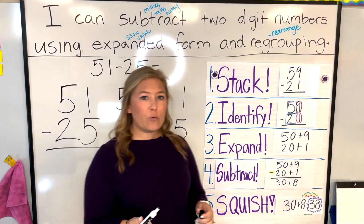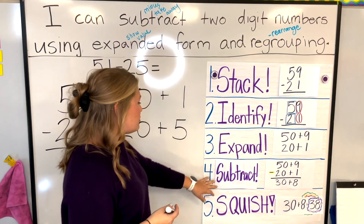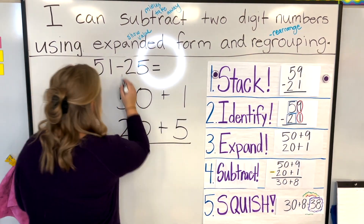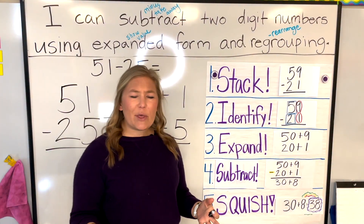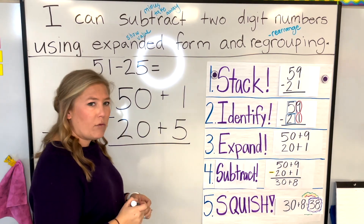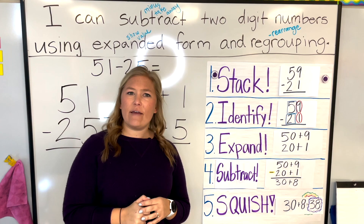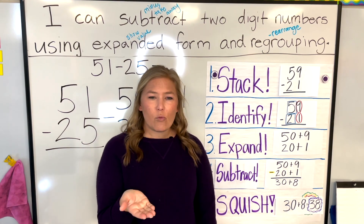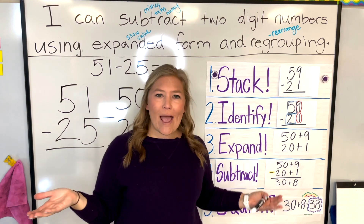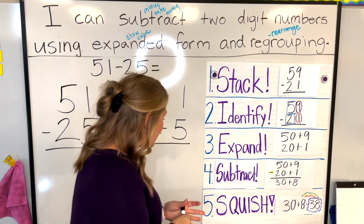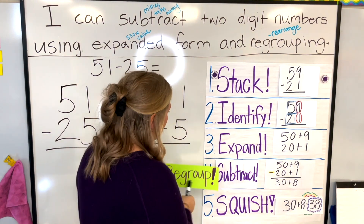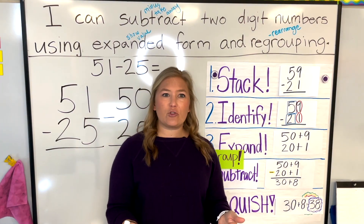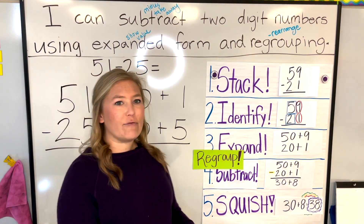Now we've expanded, and this is where we're adding an extra step today. Before we can subtract, there's something I already notice. If I were to go to the ones place and do one minus five — can I do one minus five? If I was holding one cookie and you came and said, can I have five cookies, would I be able to hand you five? No way, I only have one. So this is where we add the step to regroup — after expanding, before subtracting, we need to regroup and rearrange some numbers so that we can subtract.